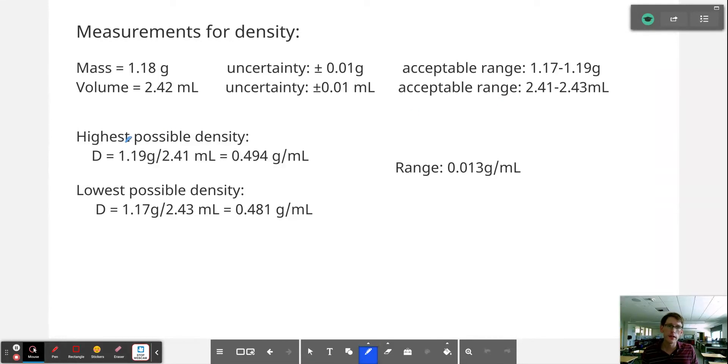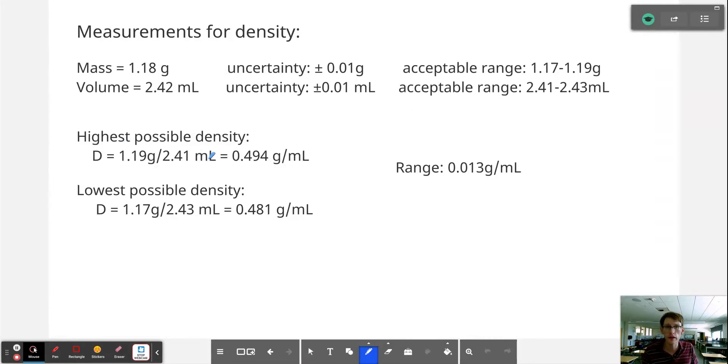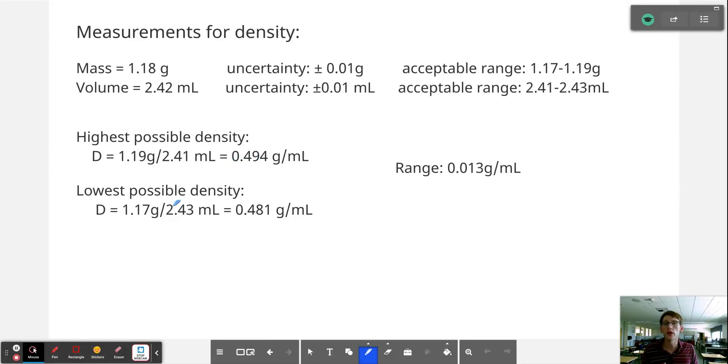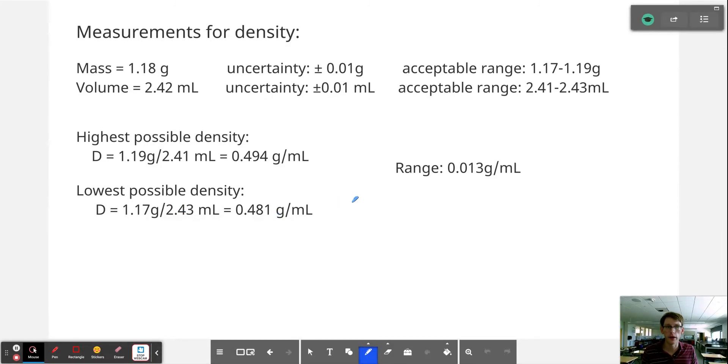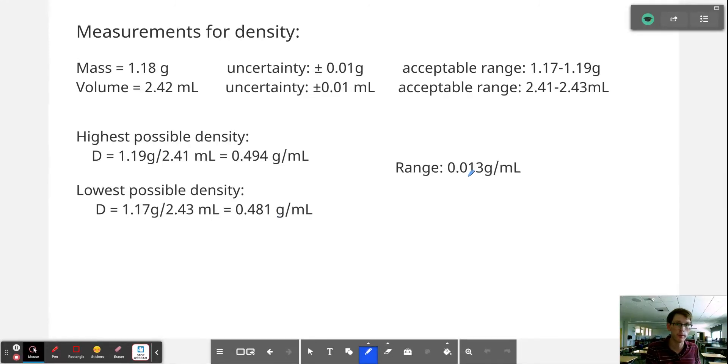The highest possible density that we could get with the appropriate number of sig figs would be 0.494 grams per milliliter, and the lowest possible density would be 0.481 grams per milliliter. And that range is not 0.13 grams per milliliter like before, that is 0.013 grams per milliliter, and that shows that we are one order of magnitude more precise using these measuring instruments than we were in the previous case.